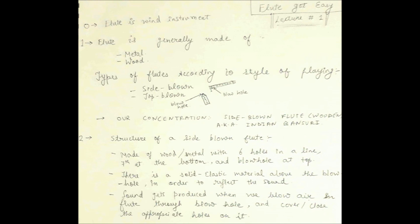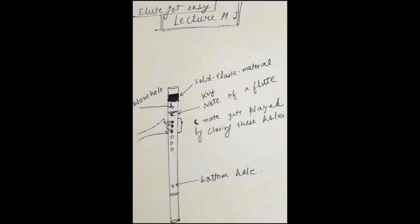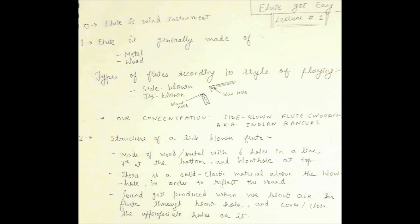There is a solid elastic material at the top of the blowhole in the interior of the flute which reflects the sound. This is necessary for scaling the flute. If that is not in the proper place, the key note of the flute may deviate, resulting in faulty performance. Now you may ask, what is key note, right?